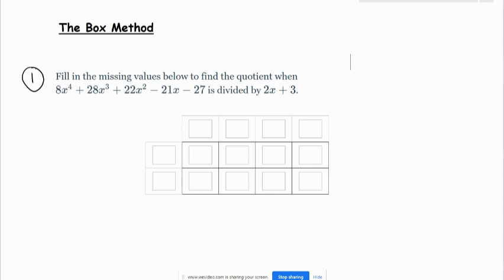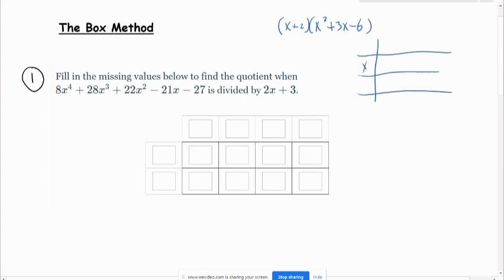This box method should make a lot of sense if you have ever multiplied polynomials like x plus 2 times x squared plus 3x minus 6, for example. If you've multiplied polynomials using a box method, it looks like this. I could put x and 2 here, and x squared, 3x, and negative 6 across the top.